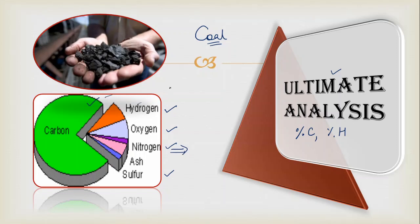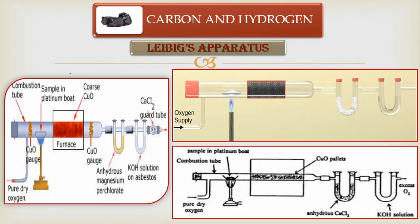If the coal sample has carbon and hydrogen, your aim is to find out how much carbon and how much hydrogen is present in the particular sample so that you can select that sample accordingly. For that you have to use Liebig's apparatus. The Liebig's apparatus is used to combust the particular sample of coal and extract carbon in terms of CO₂ and hydrogen in terms of H₂O out of it. There are many versions of Liebig's apparatus but the basic principles remain the same.